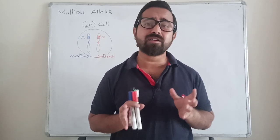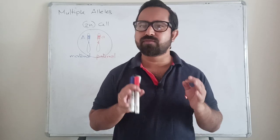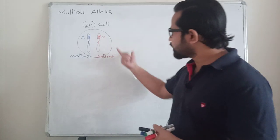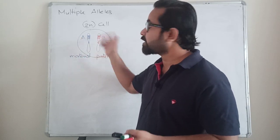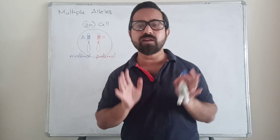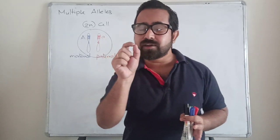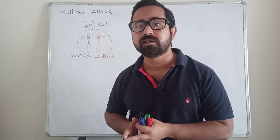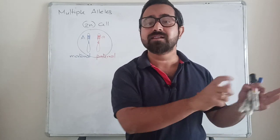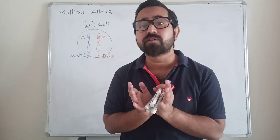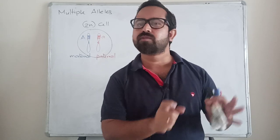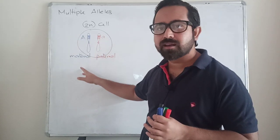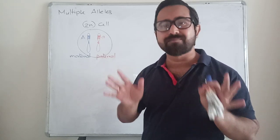You already know what Mendel said. Mendel said that for a particular gene or discrete factor there are two different variants, and we call them alleles. In a diploid cell or diploid individual, for every single chromosome there are two different homologues present. Chromosome 1 you inherit from your father and also from your mother — one maternal copy and one paternal copy. If you look at one particular gene on chromosome 1, it has two different copies: one inherited from your mother, called the maternal allele, and one from your father, called the paternal allele.